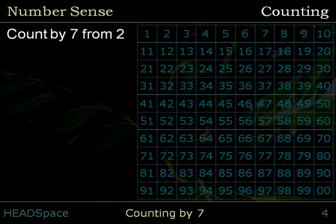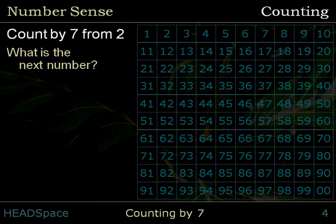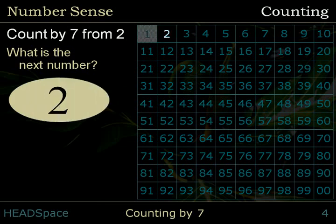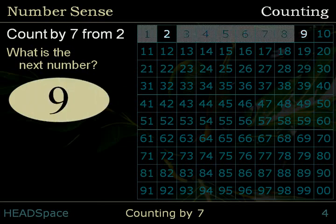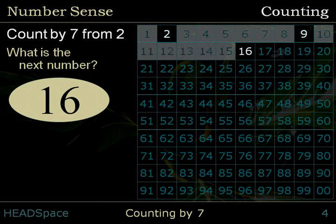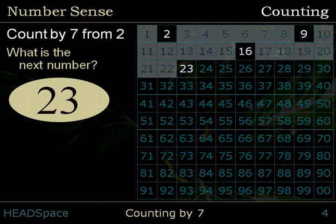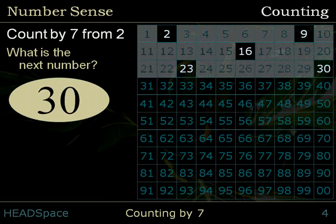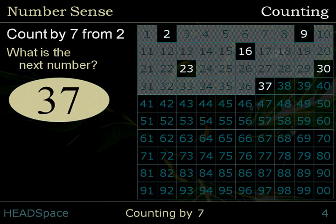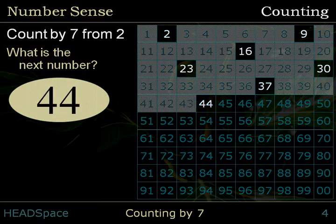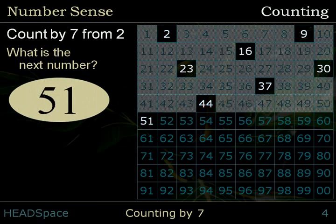Count by 7 from 2. What is the next number? 2, 9, 16, 23, 30, 37, 44, 51.